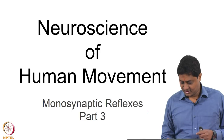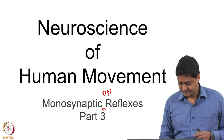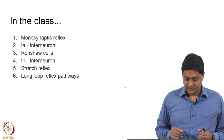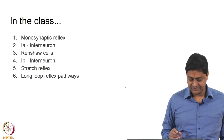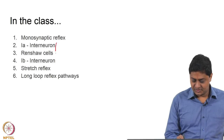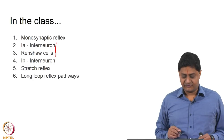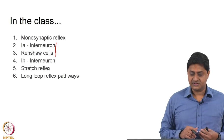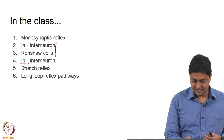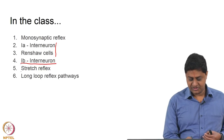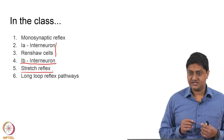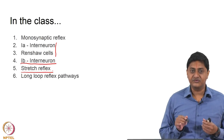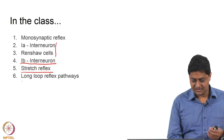Welcome to this class on monosynaptic and other reflexes. We have been discussing monosynaptic reflexes in the last two classes. In today's class we will discuss the concept of 1A interneuron, the Renshaw cell as a special inhibitory interneuron in the motor circuit, 1B interneuron, stretch reflex, alpha-gamma coactivation, and how these reflexes can be modulated by descending influences, also called long loop reflexes.